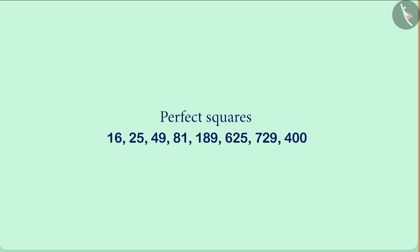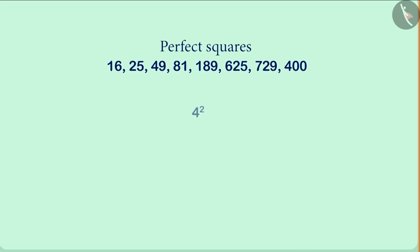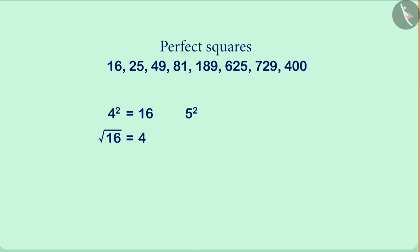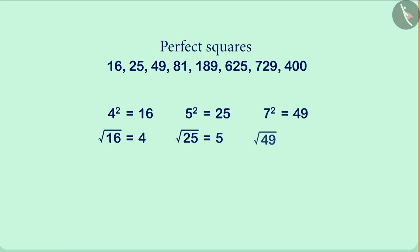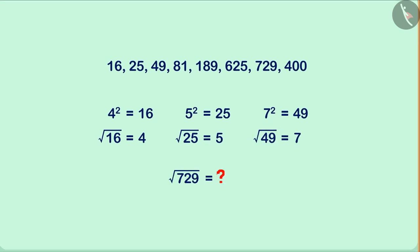There are some perfect squares on the screen. Can you find the square roots of these numbers? If the square of 4 is 16, then we can say that the square root of 16 is 4. Similarly, the square of 5 is 25, so the square root of 25 is 5. If the square of 7 is 49, then the square root of 49 is 7. Can you find the square root of the number 729?